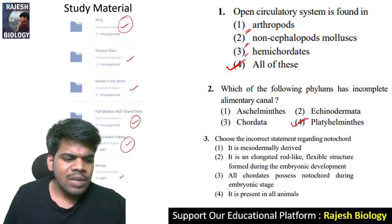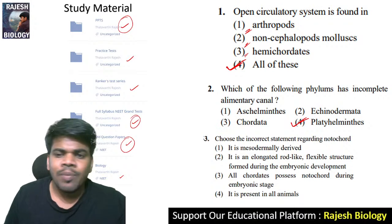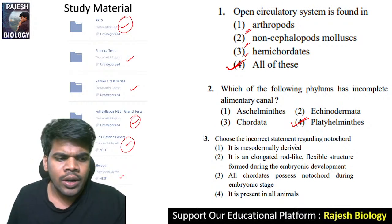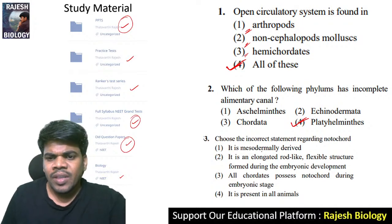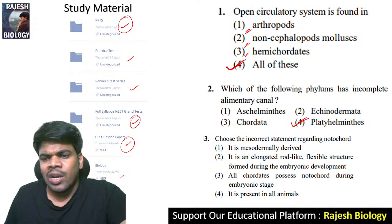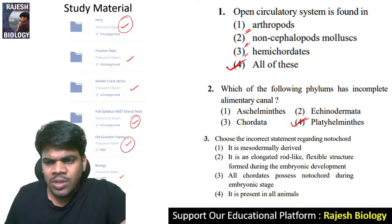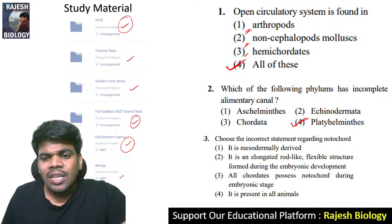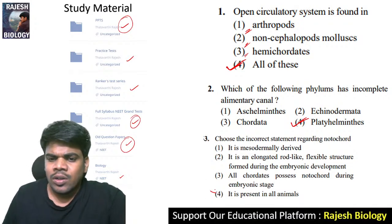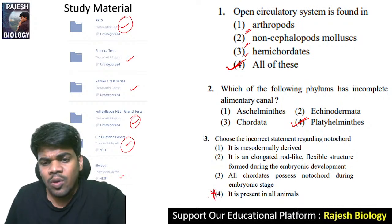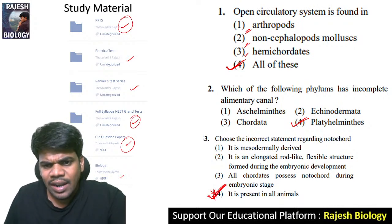Choose the incorrect statement regarding the notochord. 'It is mesodermally derived' — correct. 'It is an elongated rod-like structure' — correct. 'All chordates possess notochord during the embryonic stage' — correct. 'It is present in all animals' — this is wrong, because non-chordates don't have it. So that is the right answer for this question.